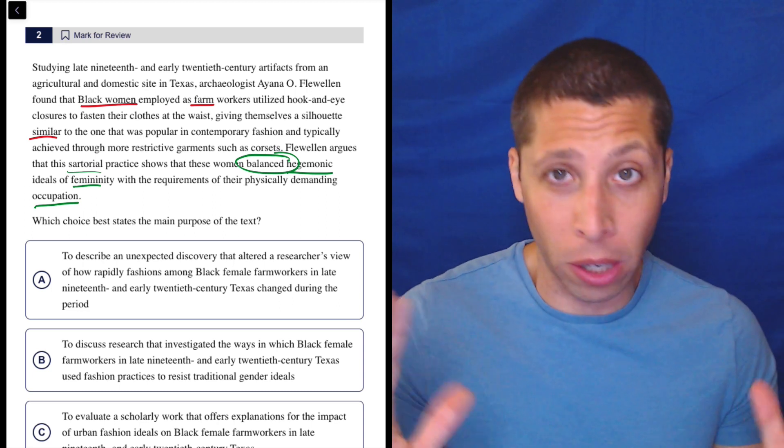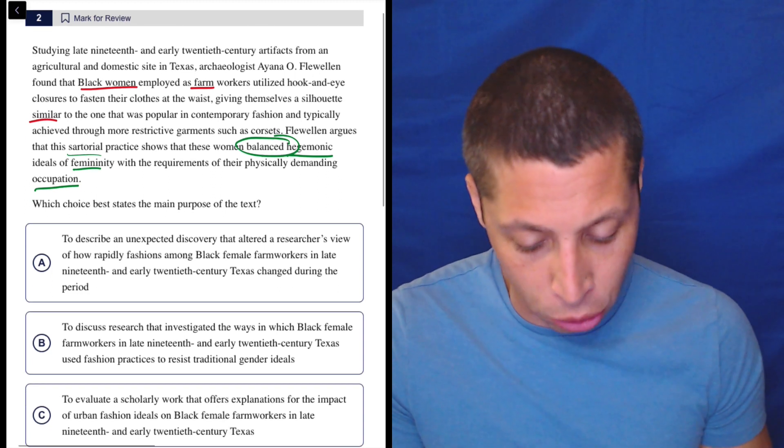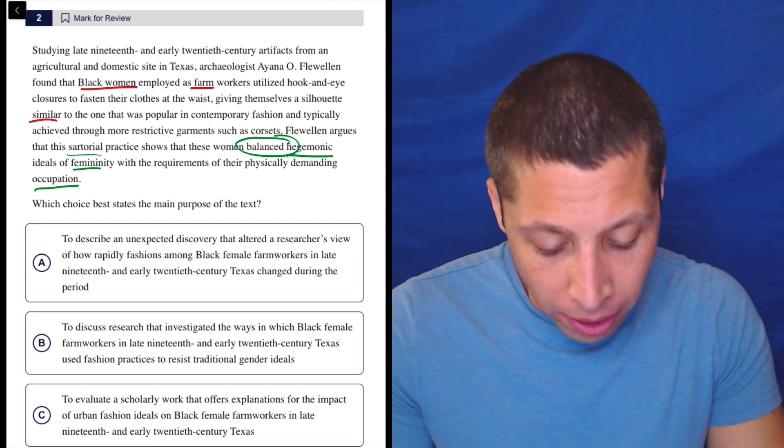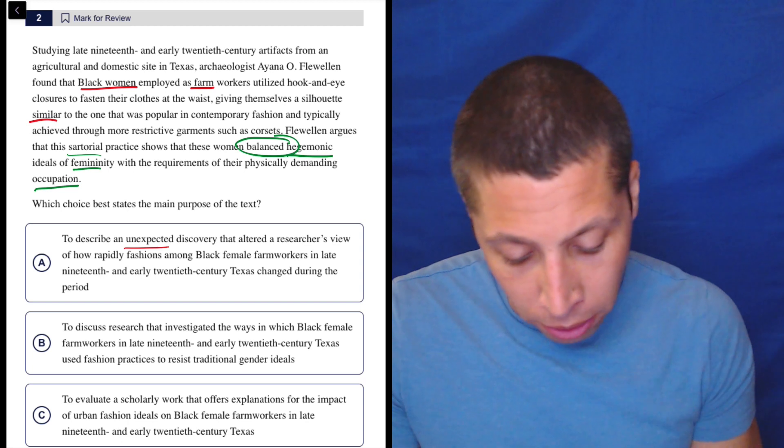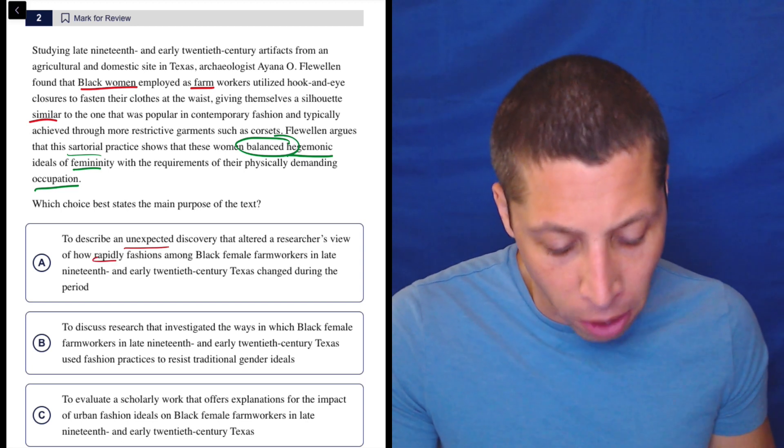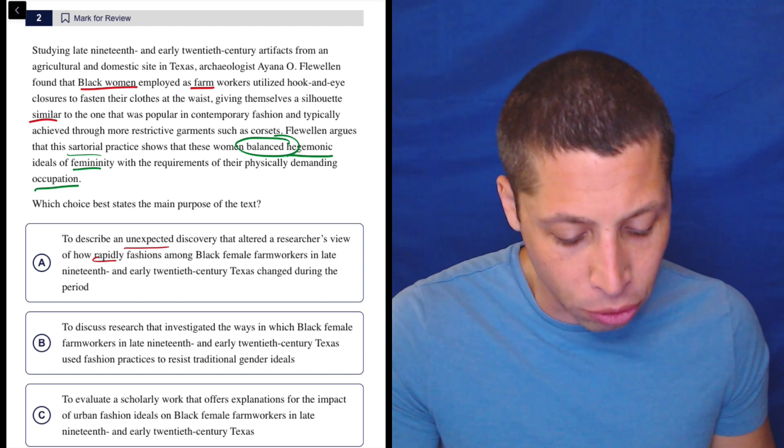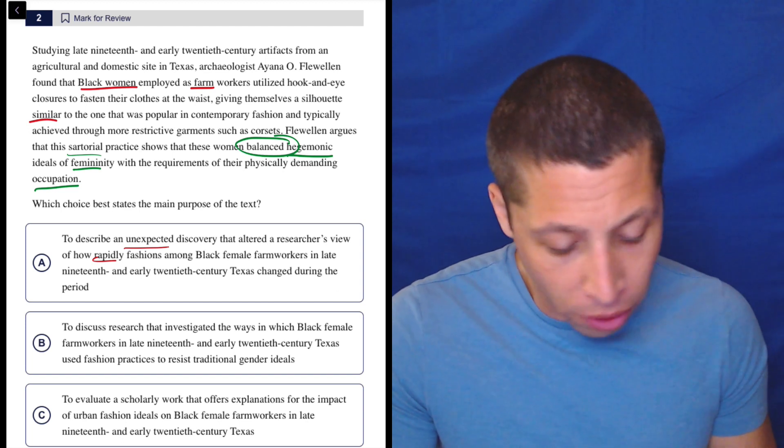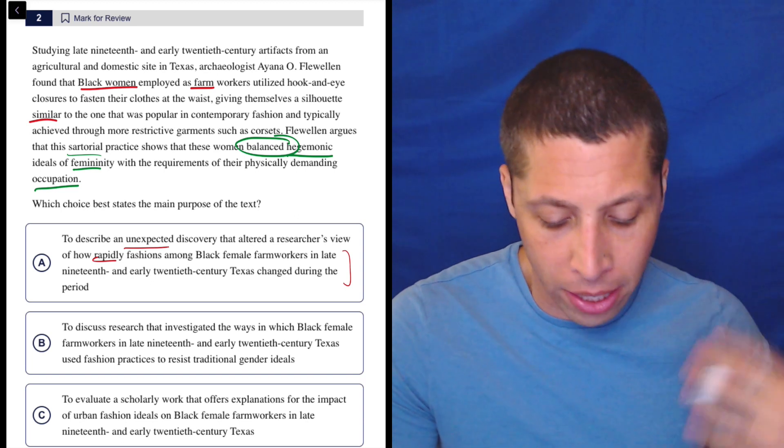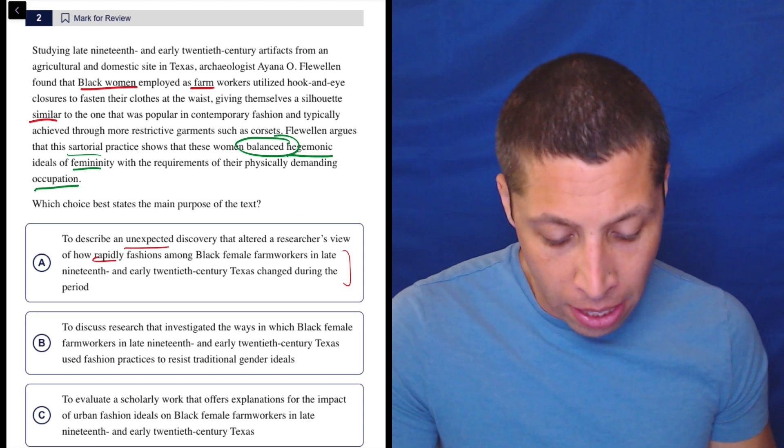All right. Well, I wouldn't even do this much work if I were reading, by the way. I just go right to the choices. A, the purpose of the text is to describe an unexpected discovery - that's a strong word - that altered a researcher's view of how rapidly - that's a strong word - fashions among black female farm workers in late 19th and early 20th century Texas changed during the period. Well, the end looks fine to me, right? They're talking about black female farm workers. They're talking about that time period. They're talking about maybe changes a little bit, but honestly, unexpected, it needs to be surprising.